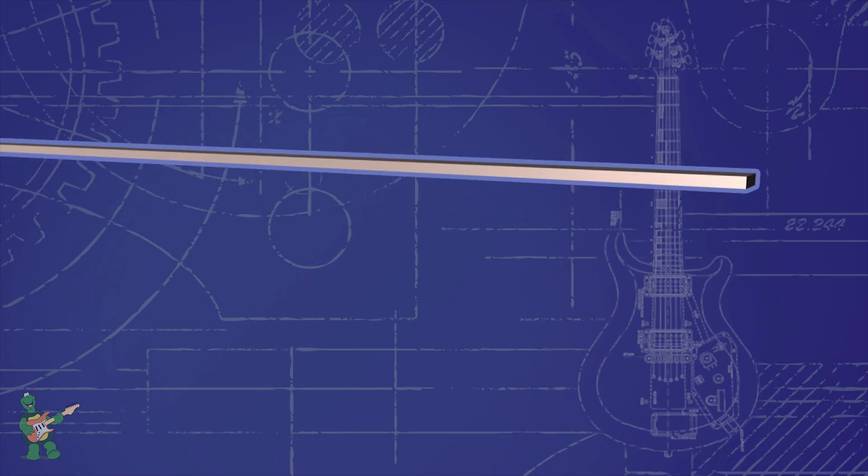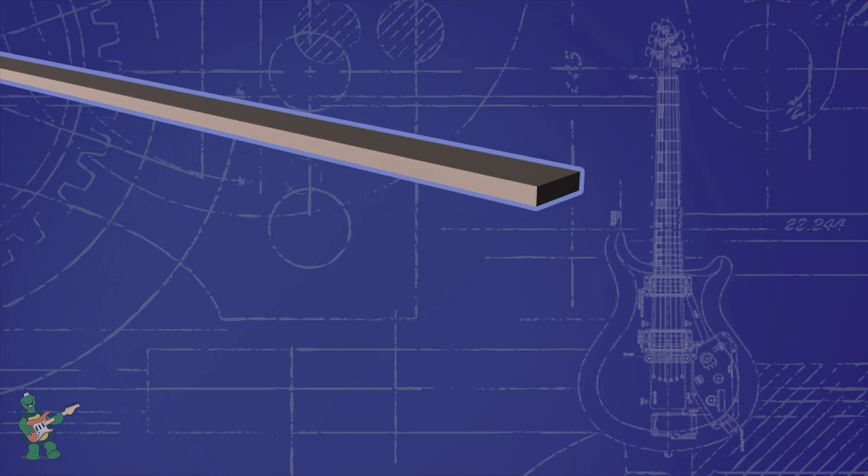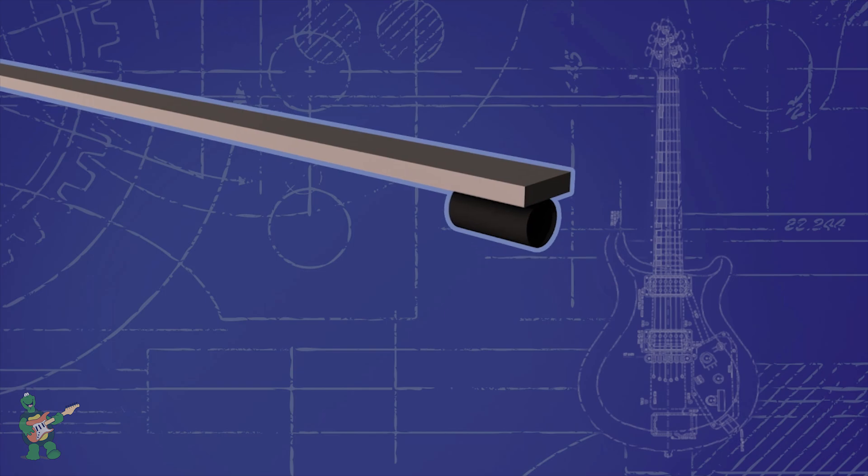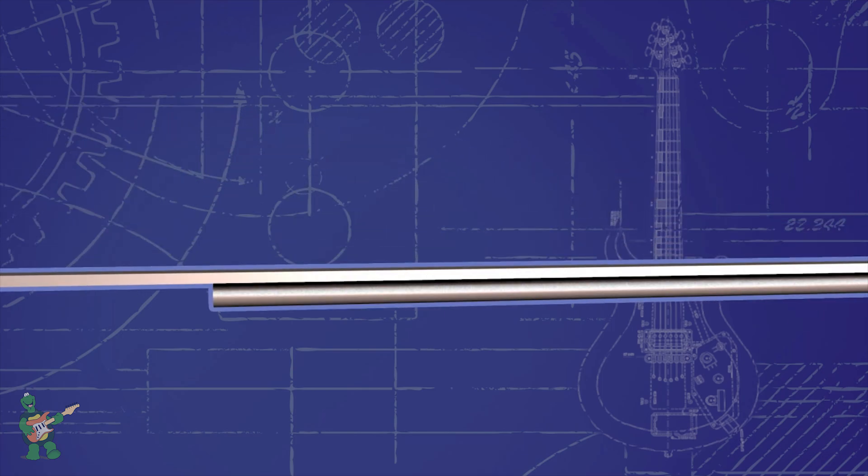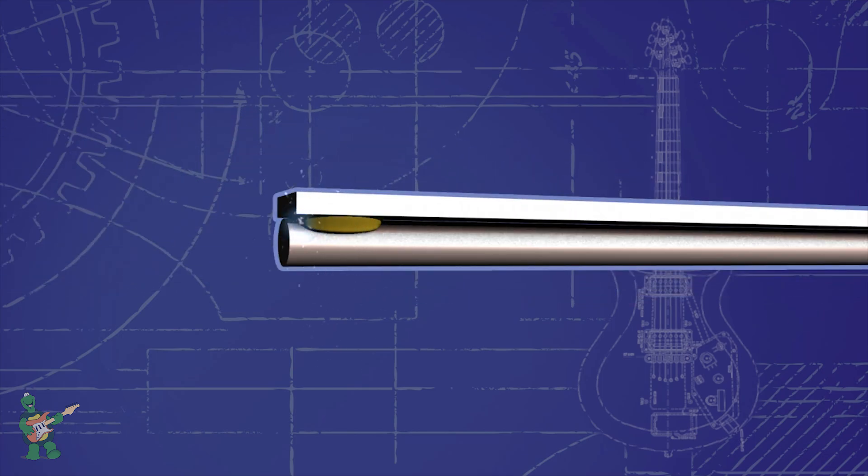Obviously we can't use a gigantic vice if the bar is in the middle of a guitar neck, so we have to think of another way to apply inward pressure. We do this by welding a small tube to one end, then we take a second bar which is round, slide it through the tube, and weld both bars together at the other end.